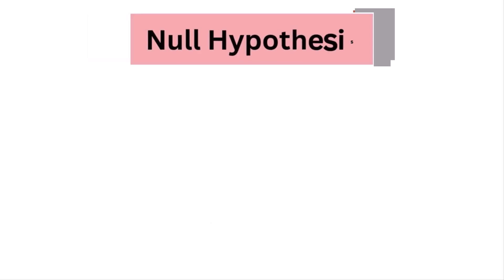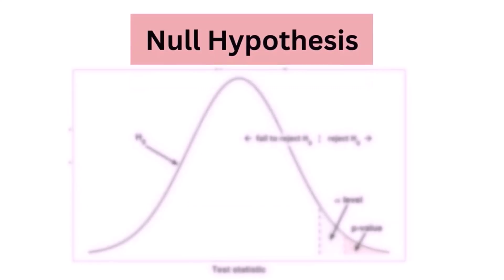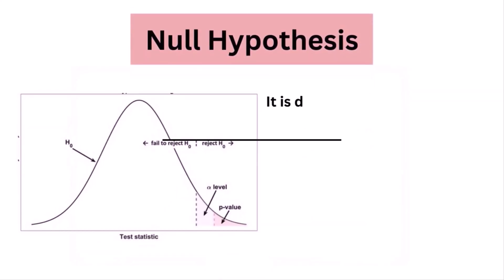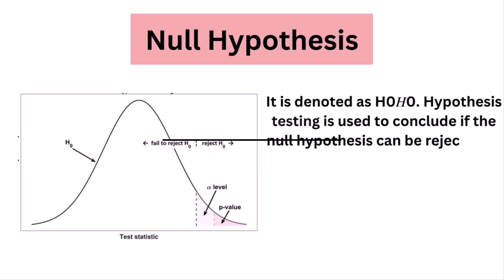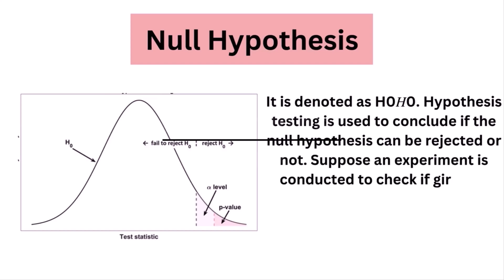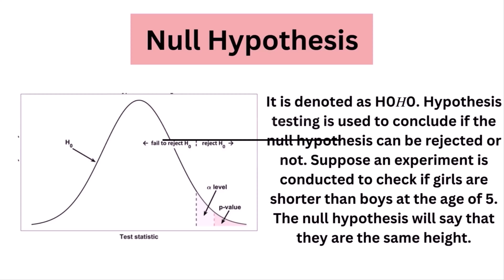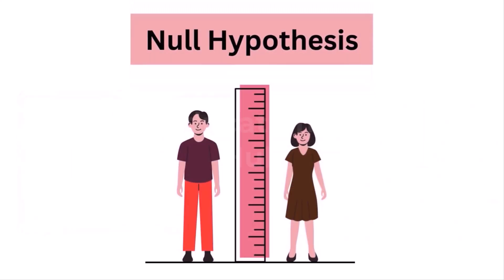1. Null hypothesis: The null hypothesis is a concise mathematical statement that is used to indicate that there is no difference between two possibilities. In other words, there is no difference between certain characteristics of data. This hypothesis assumes that the outcomes of an experiment are based on chance alone. Hypothesis testing is used to conclude if the null hypothesis can be rejected or not. Suppose an experiment is conducted to check if girls are shorter than boys at the age of 5.